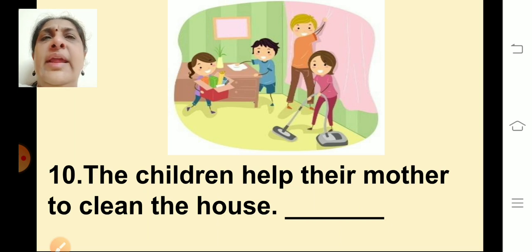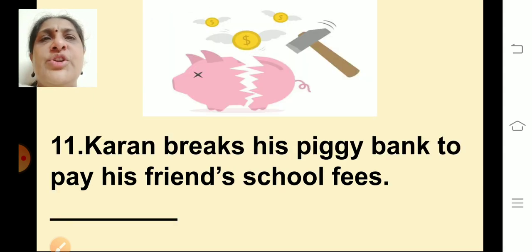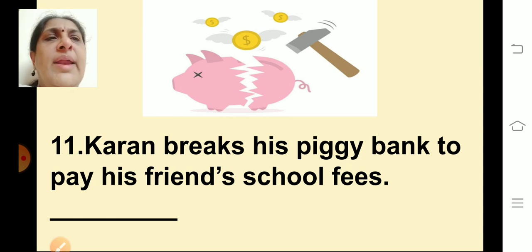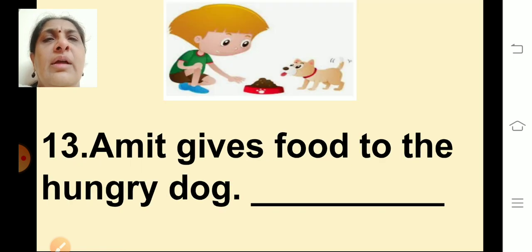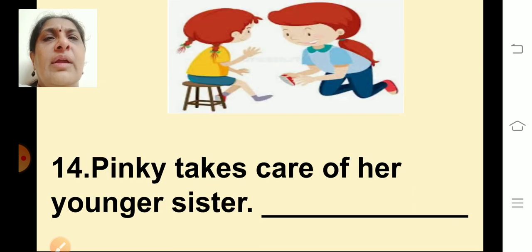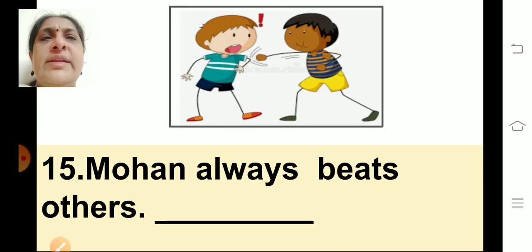Eleventh sentence: Karan breaks his piggy bank to pay his friend's school fees. Twelfth sentence: Priya gives her old books to a needy girl. Thirteenth sentence: Amit gives food to the hungry dog. Fourteenth sentence: Pinky takes care of her younger sister. Fifteenth sentence: Mohan always beats others.